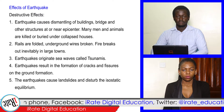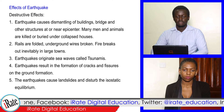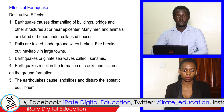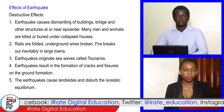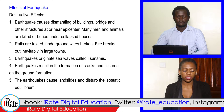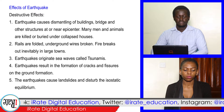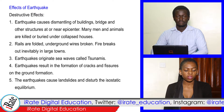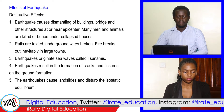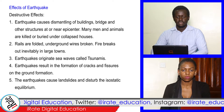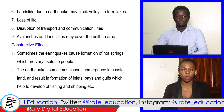Effects of earthquakes — destructive earthquakes: 1. Earthquakes cause dismantling of buildings, bridges and other structures at or near the epicenter. 2. Rails are folded, underground wires broken, and fire breaks out inevitably in large towns. 3. Earthquakes originate sea waves called tsunamis. 4. Earthquakes result in the formation of cracks and fissures on the ground. 5. Earthquakes cause landslides and disturb the isostatic equilibrium. Landslides due to earthquakes may block valleys to form lakes.